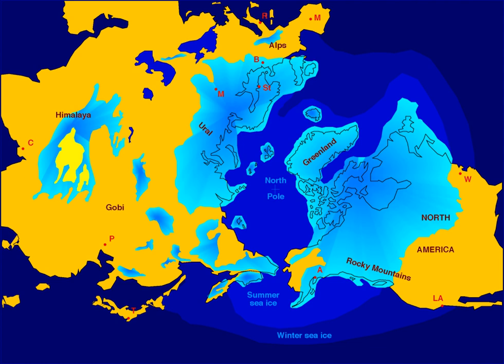Precession of the equinoxes, or wobbles of Earth's spin axis, have a periodicity of 26,000 years. According to the Milanković theory, these factors cause a periodic cooling of Earth, with the coldest part in the cycle occurring about every 40,000 years. The main effect of the Milanković cycles is to change the contrast between the seasons, not the overall amount of solar heat Earth receives. The result is less ice melting than accumulating, and glaciers build up.